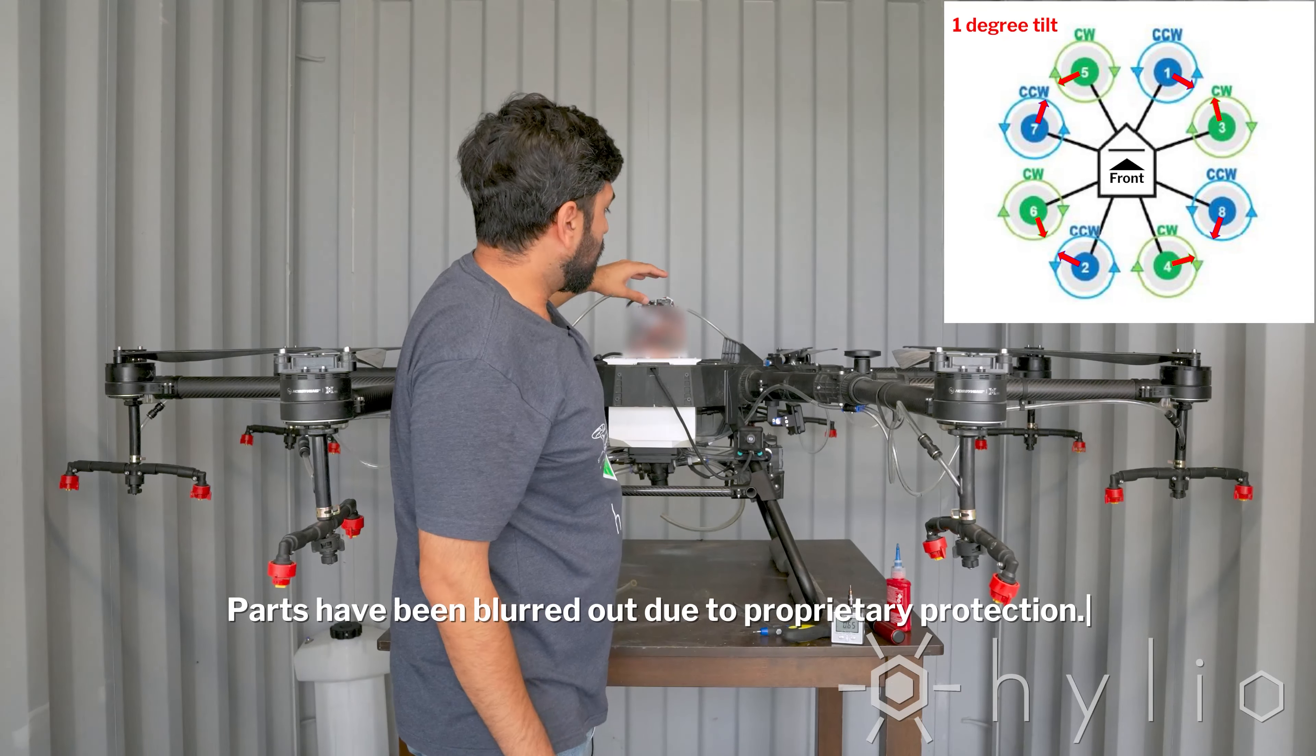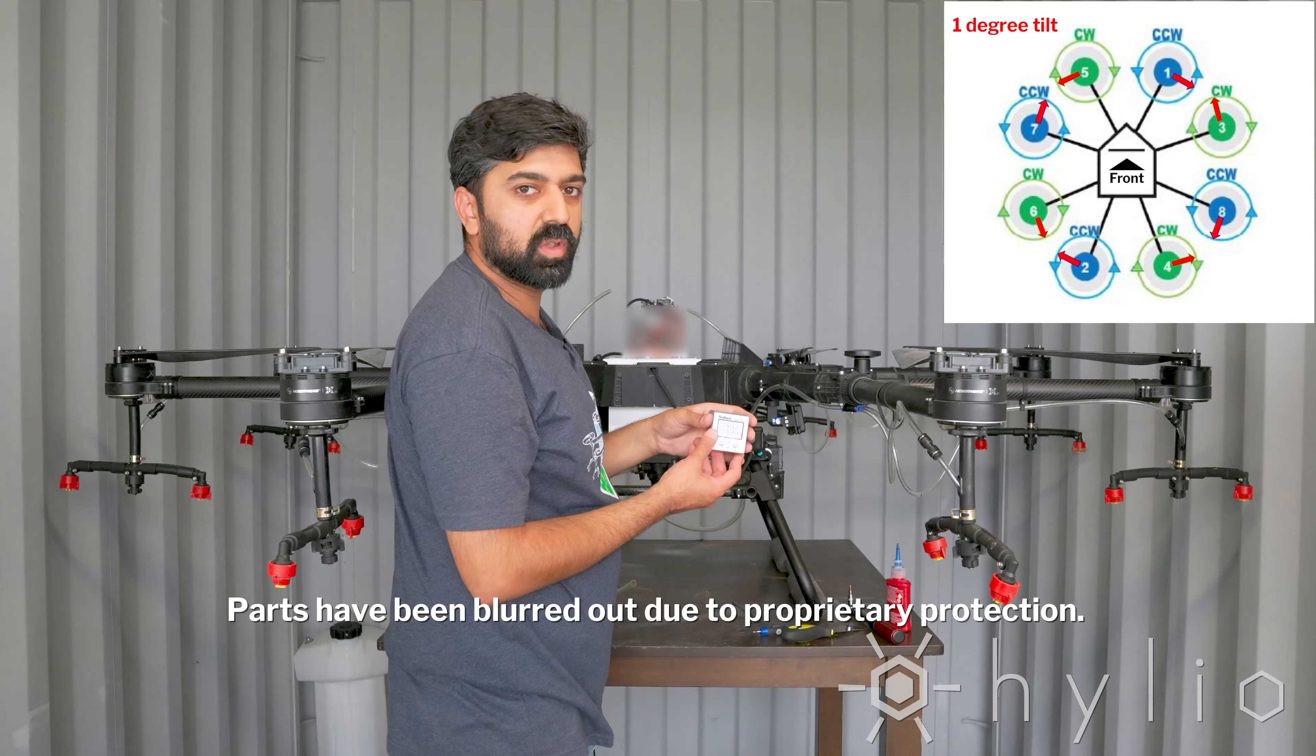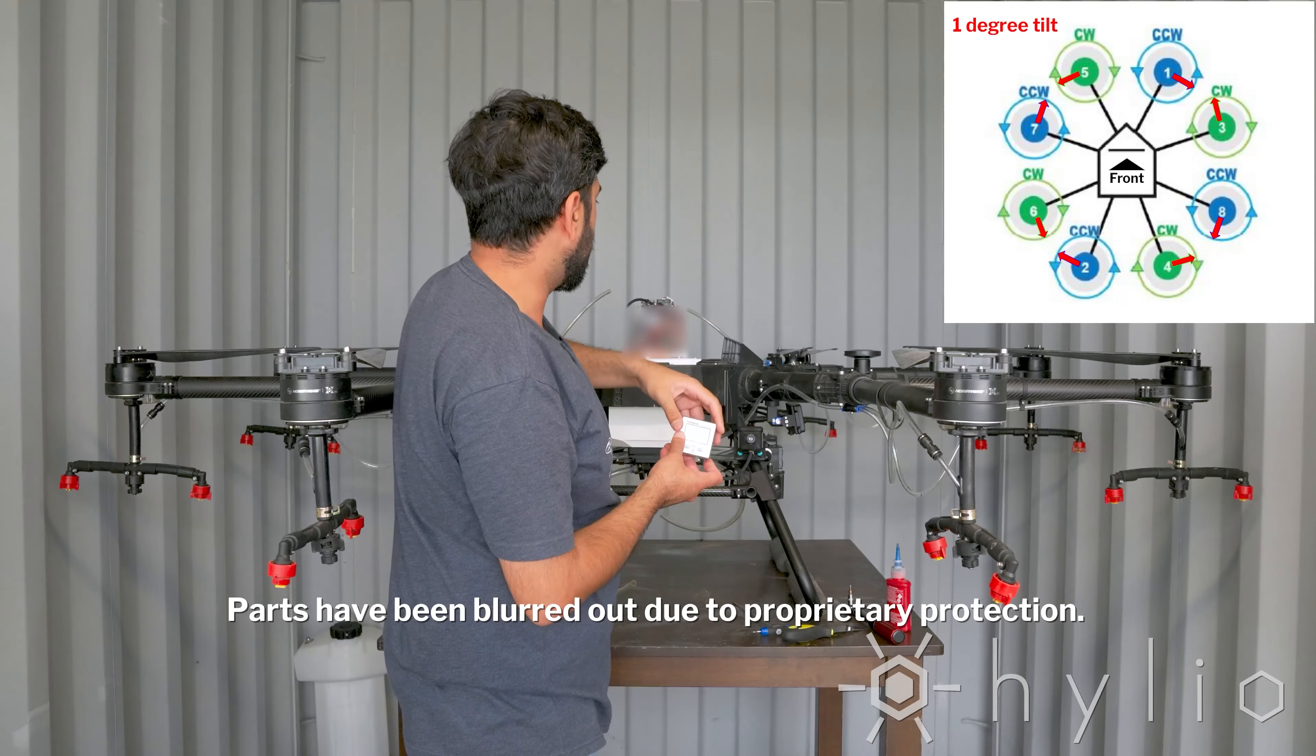You'll have to make some room on the top plate here for your digital level. One of these is provided in your toolkit or you can purchase it on Amazon or a hardware store.